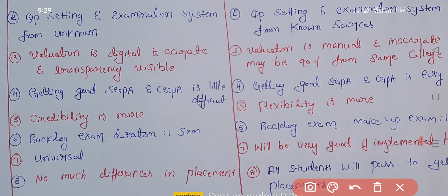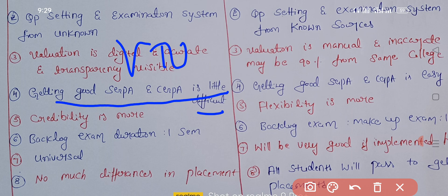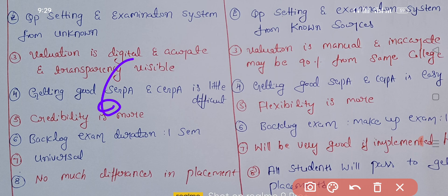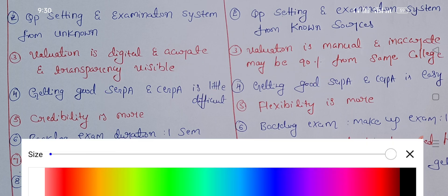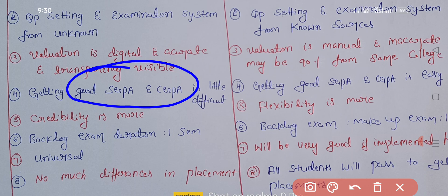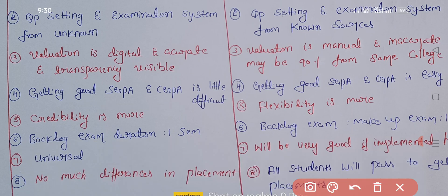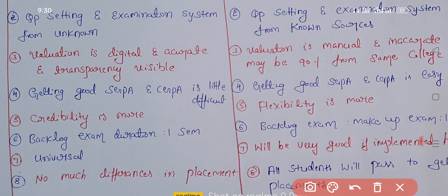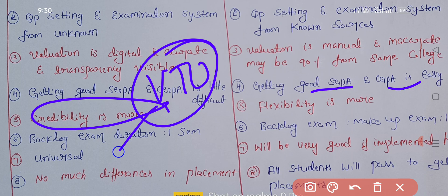The fourth point is about getting good SGPA and CGPA. In VTU, getting a good SGPA (Semester Grade Point Average) or CGPA (Cumulative Grade Point Average) is a little difficult, because the system has been established for a long time and is more credible. In autonomous colleges, it is very easy to get good SGPA and CGPA.